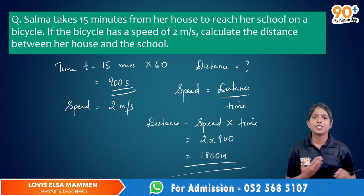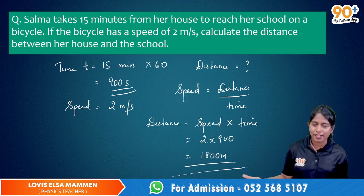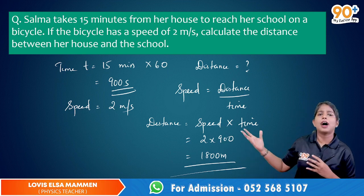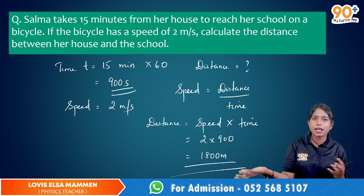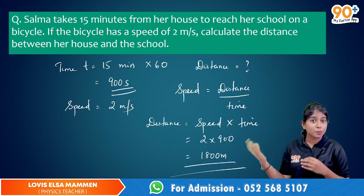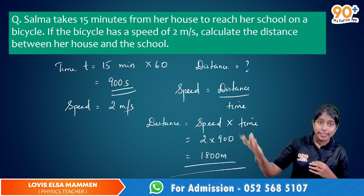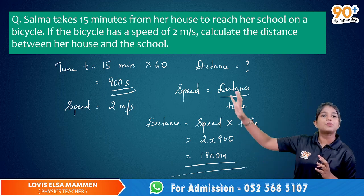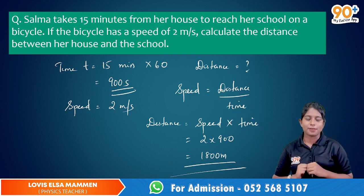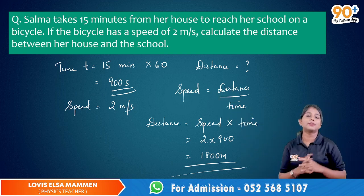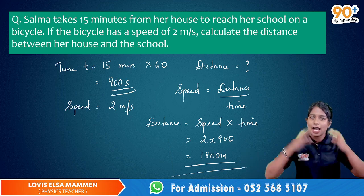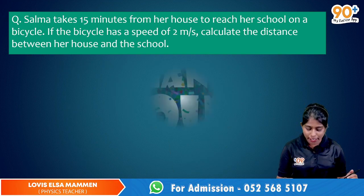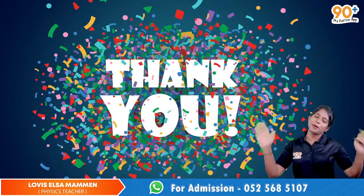This type of question can be expected in your exam. In this question they asked to find distance, but in some other question they will ask you to find speed or time. For all of these, the basic equation is speed is equal to distance divided by time. This is the basic concept of this chapter. I hope you got this. We will be back with another video, so till then take care. Bye-bye.